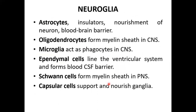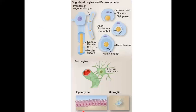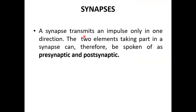The neuroglia includes several types: ependymal cells line the ventricles; microglia are the smallest cells and are responsible for phagocytosis; astrocytes provide nourishment and form the blood-brain barrier with capillaries. Schwann cells form the myelin sheath in the peripheral nervous system, while oligodendrocytes form the myelin sheath in the central nervous system.